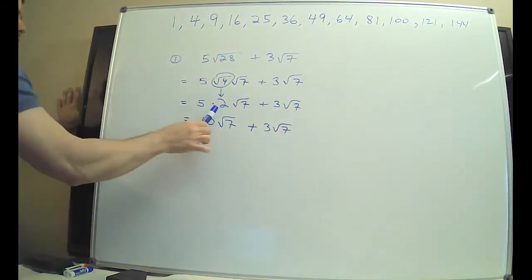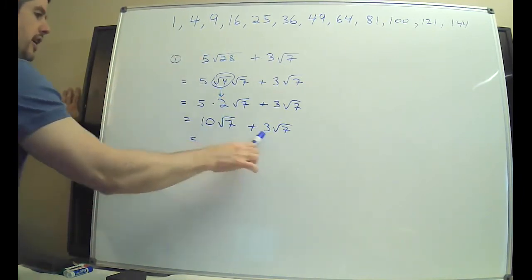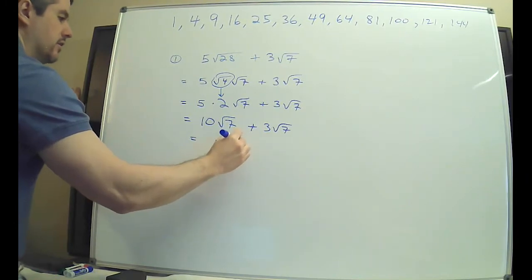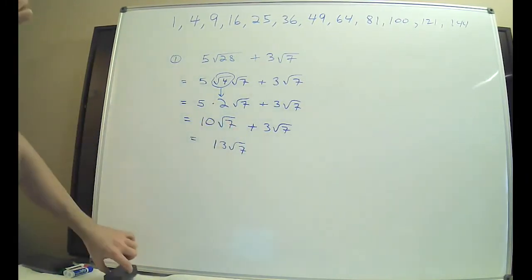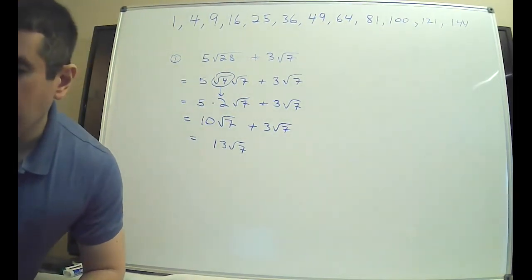Now I want to see 5 times 2. I want to see 10 radical 7 here. You cannot skip. This is an important step. Every step here is an important part of the process. You can't skip any of them. You need them all there. Don't write anything weird. Radical 4 is 2. Now, 10 radical 7s and 3 radical 7s is 13 radical 7s. This was supposed to be the easy one. So they're going to get progressively harder as we go.